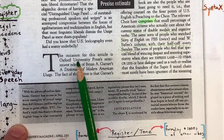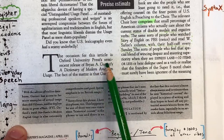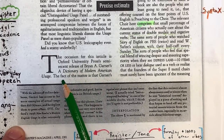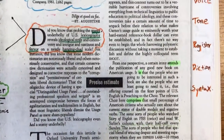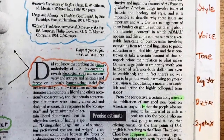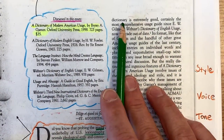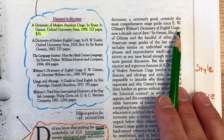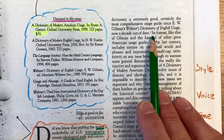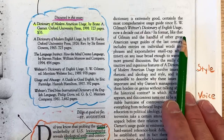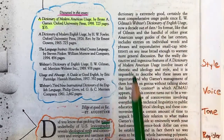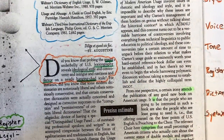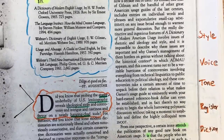The occasion for this article is Oxford University Press's semi-recent release of Brian A. Garner's A Dictionary of Modern American Usage. The fact of the matter is that Garner's Dictionary — remember, this is a book review — is extremely good. Certainly the most comprehensive usage guide since E.W. Gilman's Webster's Dictionary of English Usage, now a decade out of date.